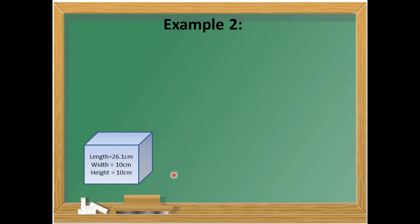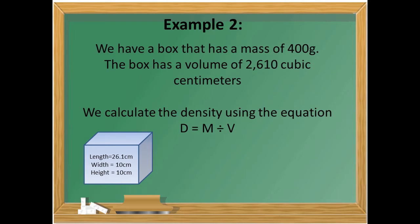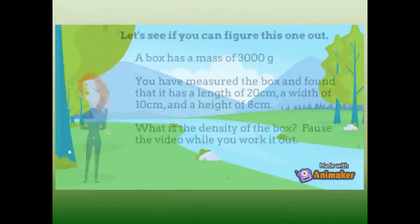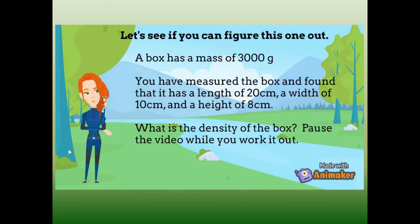For this next example, we have a box with a mass of 400 grams and a total volume of 2,610 cubic centimeters. Using density equals mass divided by volume: density equals 400 grams divided by 2,610 centimeters cubed, and we get a density of 0.15 grams per centimeter cubed.